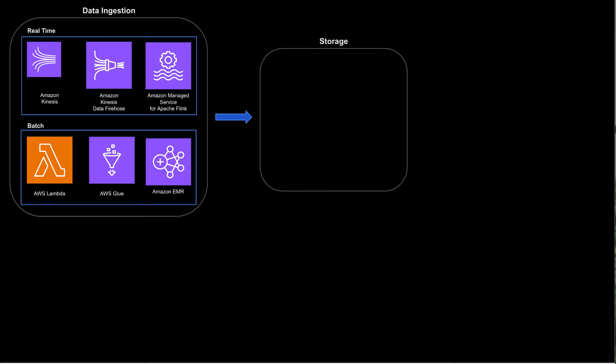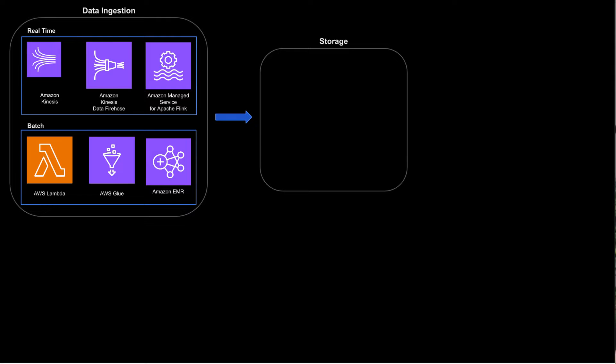Once you have these services nailed then we have to store our data somewhere. The three core services I see the majority of use cases using to store their data are S3, RDS, and DynamoDB. S3 stands for Simple Storage Solution — this is an object storage within AWS and it forms the backbone of data lakes in AWS. If you're not familiar with this service, stop the video and go learn about it now.